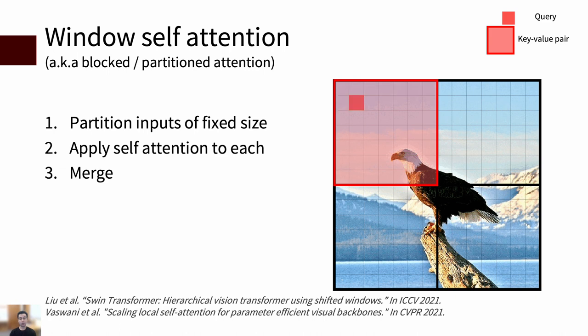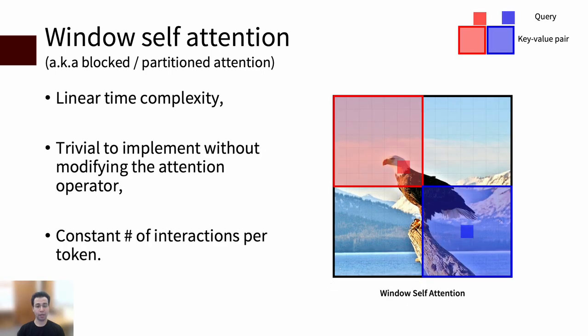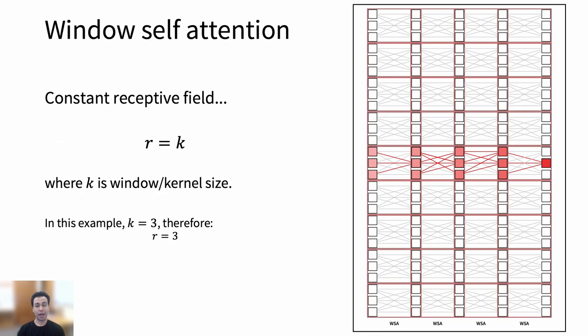This brings us to partitioned or window self-attention, which is used in models such as SWIN Transformer. This approach partitions inputs and applies self-attention to each partition separately. It not only has a linear time complexity like SASA, it can be implemented trivially with very little overhead and maintains a fixed number of interactions per token, neither of which can be said about SASA.